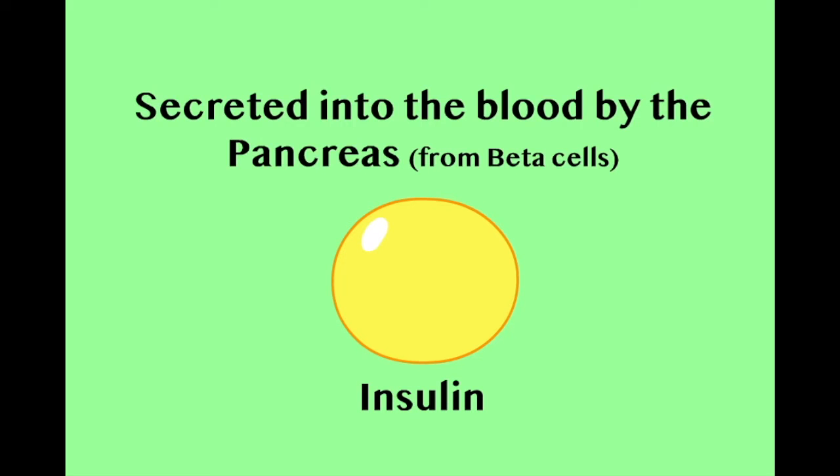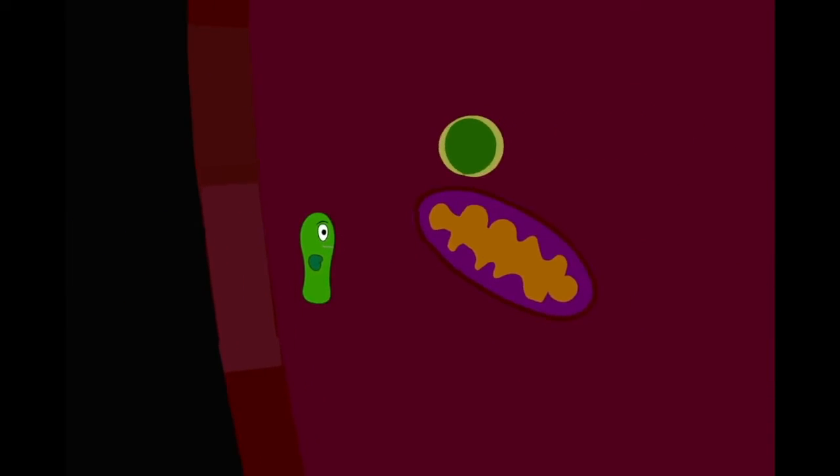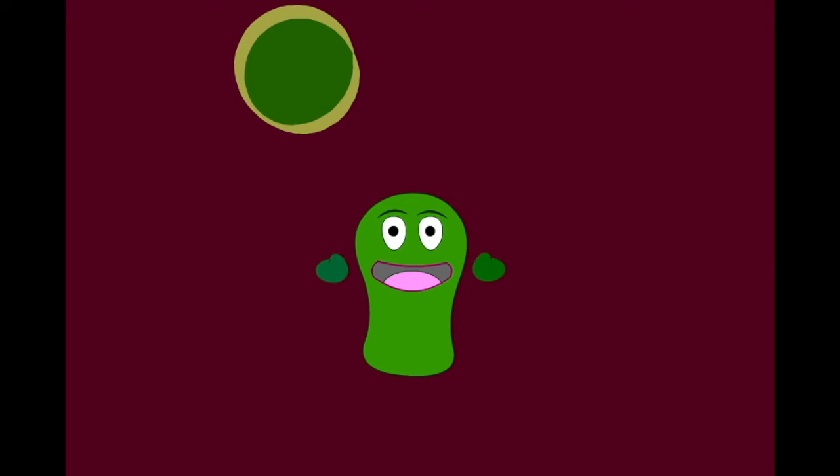Insulin is secreted into the blood by specialist cells in the pancreas. It can be thought of as a bit like a key, unlocking the cell and allowing the glucose to enter. Insulin interacts with the membrane of the cell, making it permeable to glucose. Once the glucose is inside, it can be broken down and used for energy.